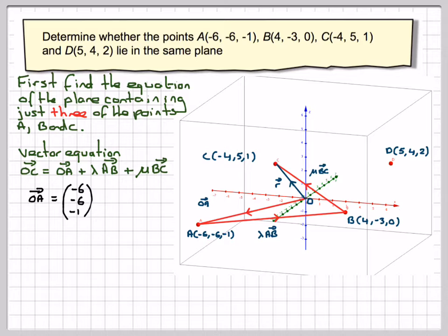OA is quite straightforward because going O to A is just going to be (-6, -6, -1). AB is the same as going AO plus OB. AO plus OB, so it's going to be going against the arrow of this one, so it's going to be (6, 6, 1) plus OB, which is (4, -3, 0). Working that out, we're going to get (10, 3, 1).